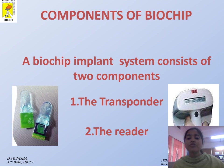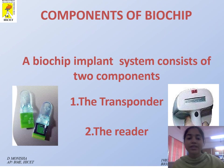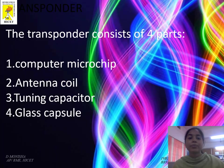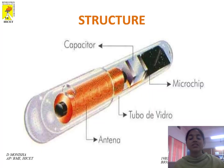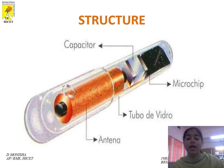Components of Biochip: There are two broad category components — transponder and reader. The transponder consists of four parts: computer microchip, antenna coil, tuning capacitor, and glass capsule. This is the structure of the biochip. You can see here: capacitor, microchip, glass capsule, and antenna coil.